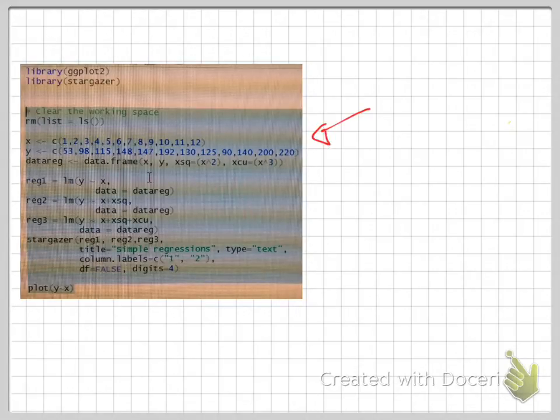So if we estimate this in R, for example, here's the code you can use to estimate this yourself. We have the x variables on the first line. We have the y variables here. Then we define the data frame of the x, the y. We define x squared, and we define a variable called x cubed.